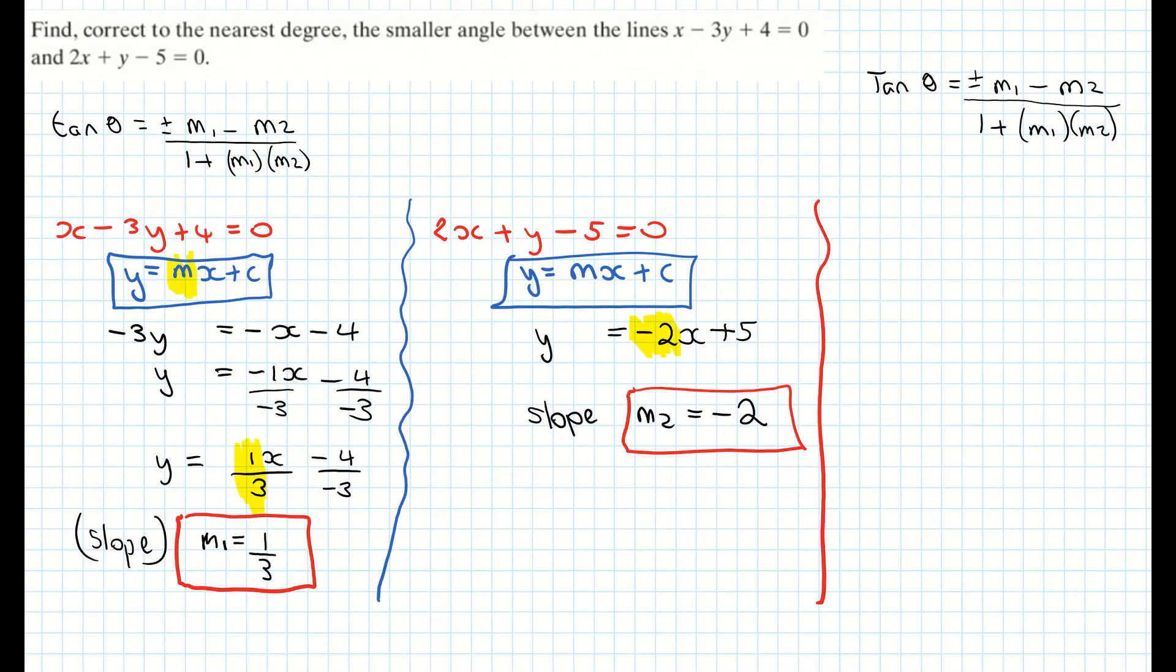Now the plus or the minus doesn't really come into play with these questions. We always kind of take the positive solution. So if you're getting a negative answer just always make your answer positive. Imagine that you're using those modulus brackets there if that's the approach you want to take. So I'm going to sub in my formula here.